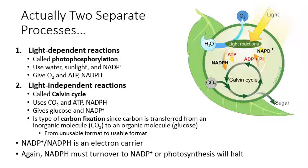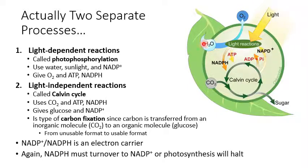One final point about the light reactions and dark reactions: the NADPH produced in the light reactions has to turn over into NADP+ in the dark reactions. If you don't have a source of NADP+, your light reactions are not going to go forward — they must have NADP+ as a reactant to proceed. In the dark reactions, you use NADPH and convert it to NADP+, which is then used by the light reactions. If you don't have the dark reactions occurring, you won't get back your NADP+, and the light reactions will stop as well.